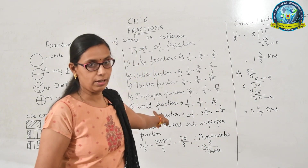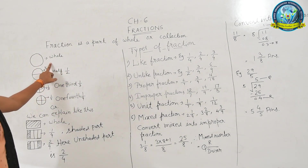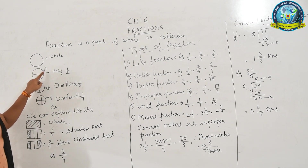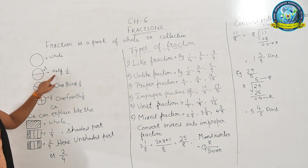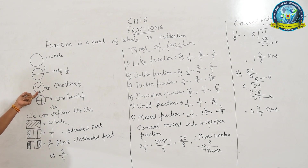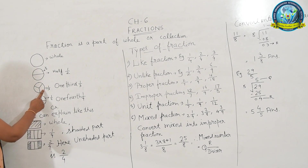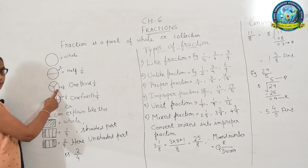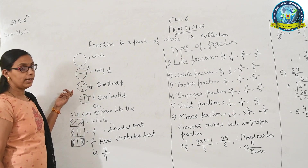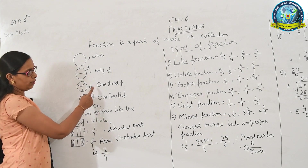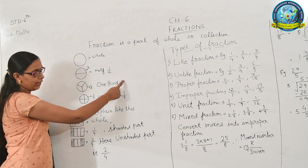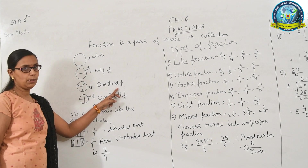Same as in this figure — this is a whole pizza and when we cut it into 2 equal parts, one part is called half, which is 1 upon 2. In the next figure, how many parts? 3 parts — 1, 2, and 3. The pizza is divided into 3 equal parts, so 1 part is called 1 third, which is 1 upon 3. Here, 1 is the numerator and 3 is the denominator.